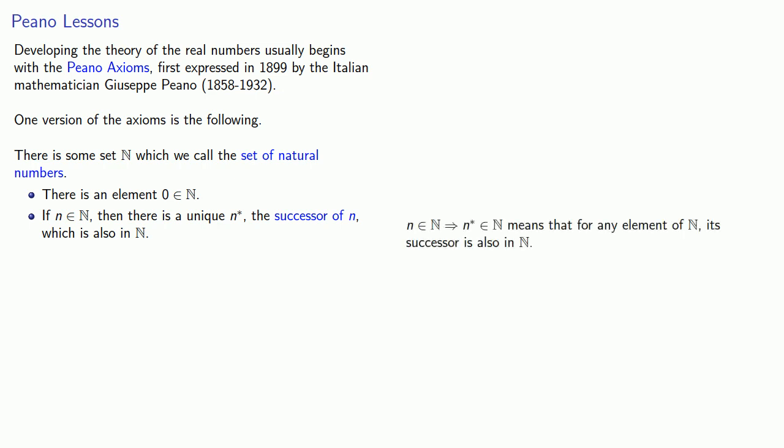So n in the set of natural numbers, meaning that n* is also in the set of natural numbers, means that for any element of the set of natural numbers, its successor is also in the set.